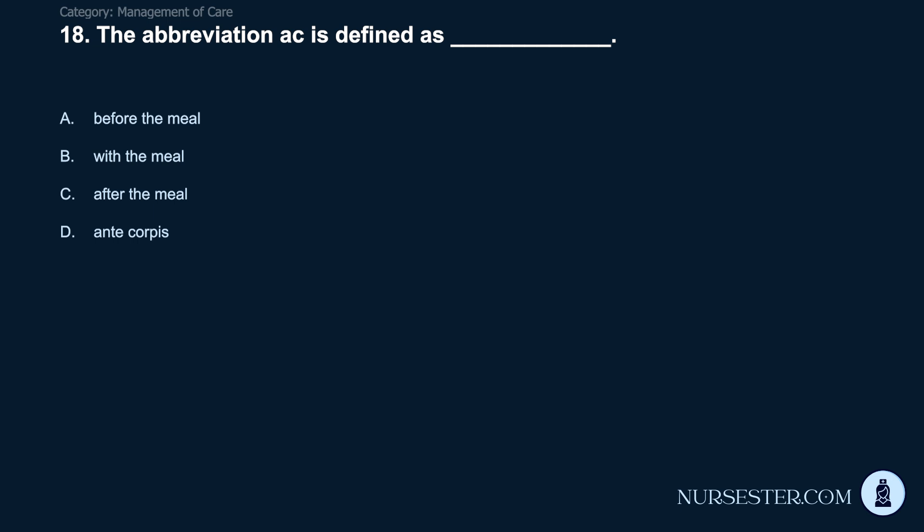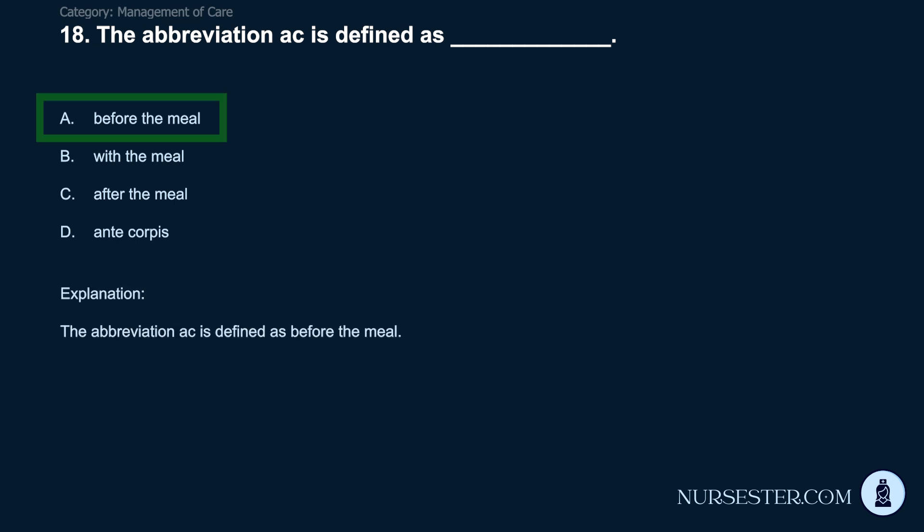Question 18: The abbreviation AC is defined as: A) before the meal. B) with the meal. C) after the meal. D) anticorpus. Correct answer: A. Before the meal. The abbreviation AC is defined as before the meal. Question 19: The abbreviation PC is defined as: A) before the meal. B) with the meal. C) after the meal. D) postcorpi. Correct answer: C. After the meal. The abbreviation PC is defined as after the meal.